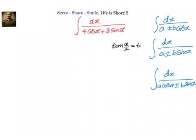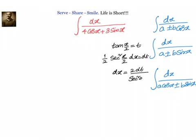Let us now differentiate. We will have half secant square x by 2 dx equal to dt. From that we can write down dx equal to 2 into dt divided by secant square x by 2. But we know that if tan x by 2 equal to t, then secant square x by 2 will be 1 plus t square. So dx equal to 2 dt divided by 1 plus t square.